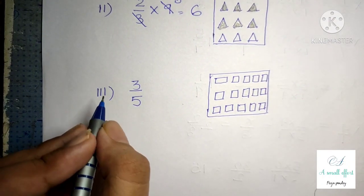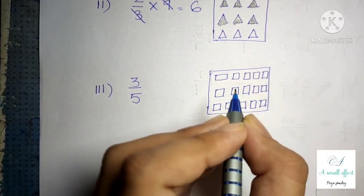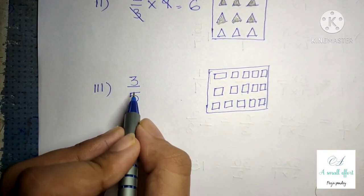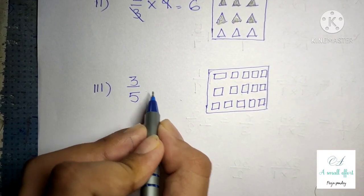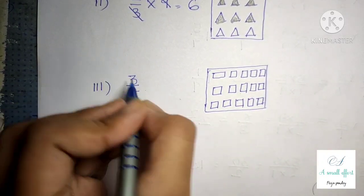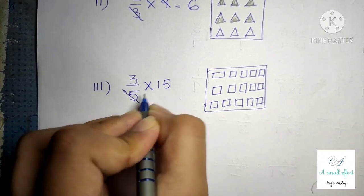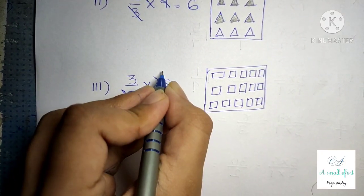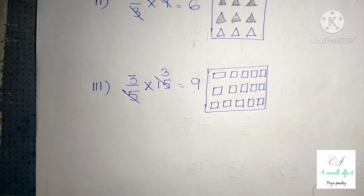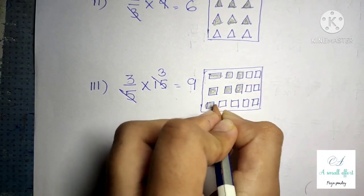Question number 4 part 3 is 3 by 5 of the given squares. To find how many squares to shade, we multiply 3 by 5 into the number of squares, which is 15. In the 5 times table, 15 comes 3 times, so 3 threes are 9. This means we have to shade 9 squares in the box.